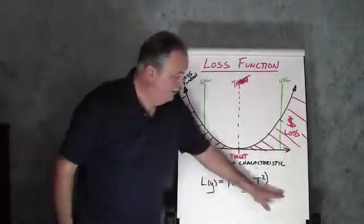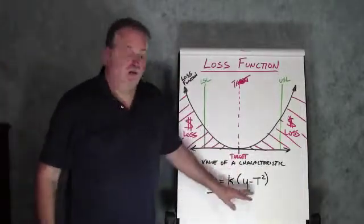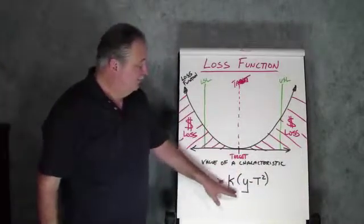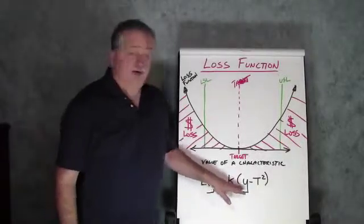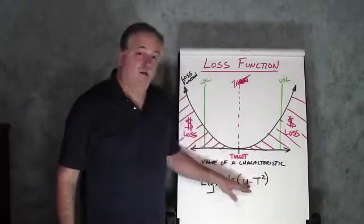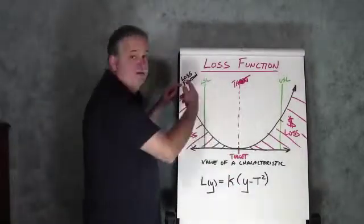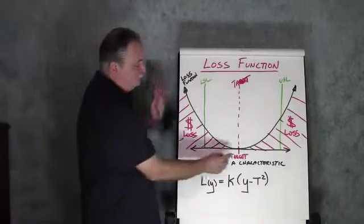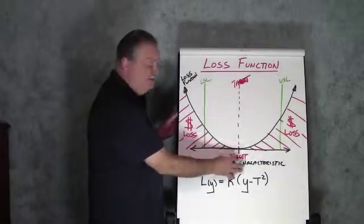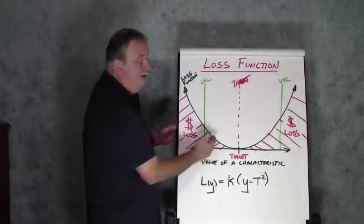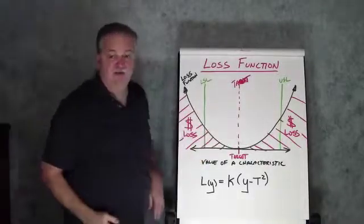Alright, and he came up with a very generalized equation where the loss of y is some constant times y minus the target squared. Alright, and that is actually the equation for a parabola. Now, what this is showing is that as I deviate from the target, I begin to incur losses even though I'm well within my specification.